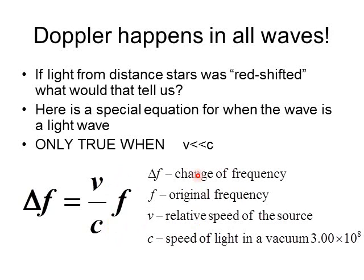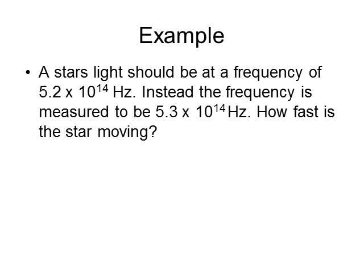This equation only works when the velocity of the object is much less than c — specifically, at least 100 times less than c. That still allows speeds up to about 3 million meters per second, so it works in most practical cases we'll encounter.